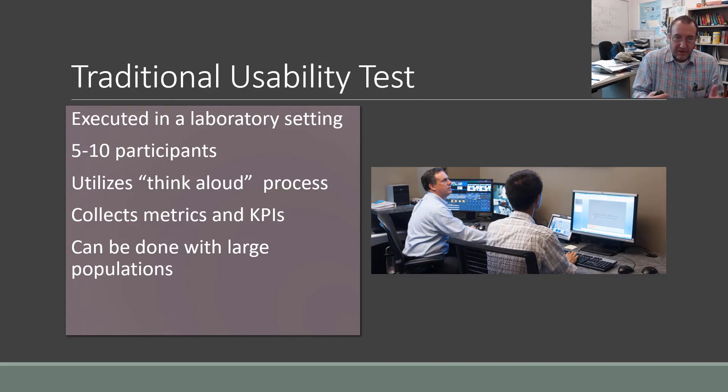The general guidance is that you should have between 5 and 10 participants to get the most value for your usability test. The studies say that between 5 and 10 participants can determine between 75 and 80 percent of the issues in your product. Be careful with that because we don't know how many issues we programmed into our product. So we don't really know when we've got to 80 percent of them discovered.